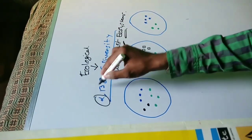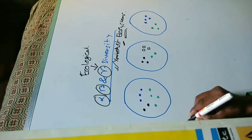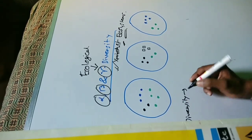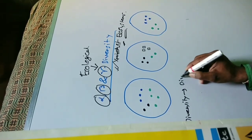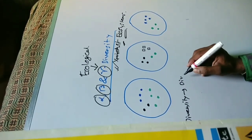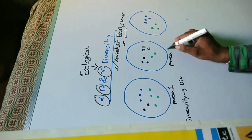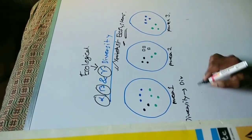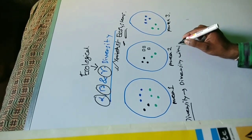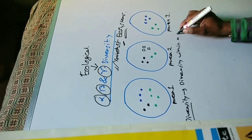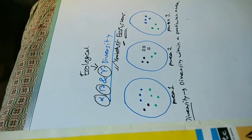Alpha, beta, and gamma diversity are parts of ecological diversity. Now, what is alpha diversity? Simply, alpha diversity means the diversity within a particular area. Let's assume this is area one, area two, and area three — alpha diversity simply means the diversity within a particular area.